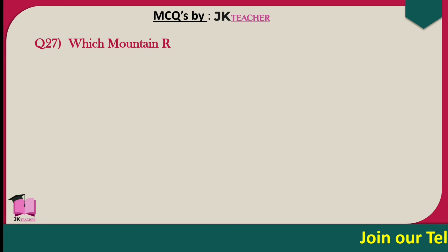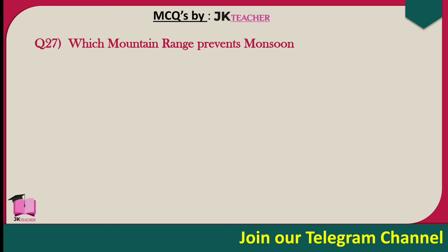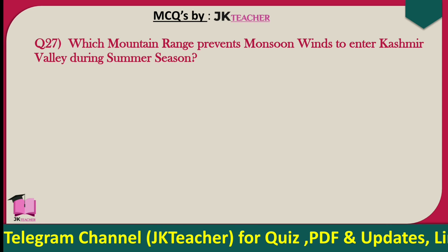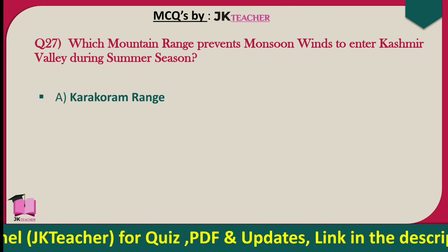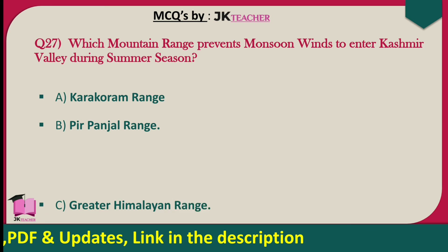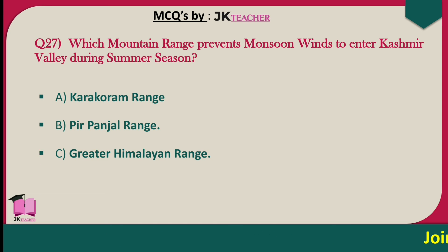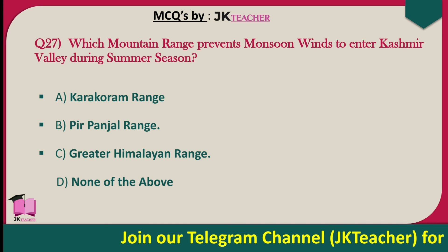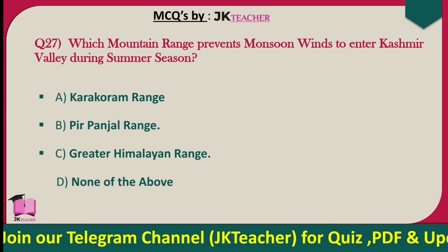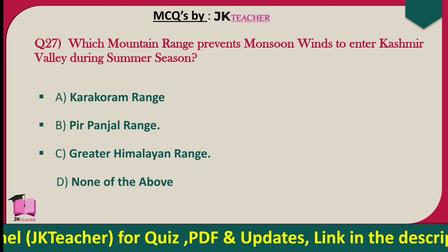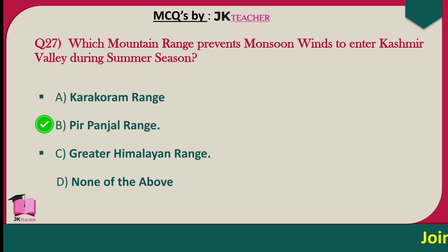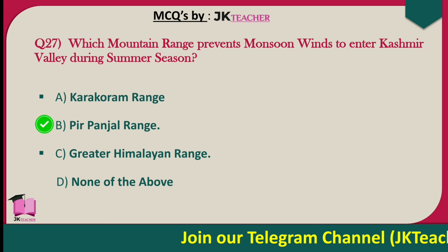Which mountain range prevents monsoon winds from entering Kashmir valley during summer season? Options are Karakorum range, Peer-Panjal range, Greater Himalayan range, and none of these. The right answer is option B — Peer-Panjal range prevents monsoon winds from entering Kashmir valley during summer season.